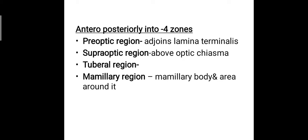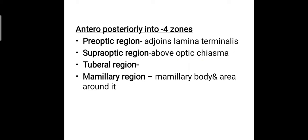Anteroposteriorly, the hypothalamus is divided into four regions: the pre-optic region, supra-optic region, tuberal region, and the mammillary region. The pre-optic region adjoins the lamina terminalis. The supra-optic region is placed above the optic chiasma. Then comes the tuberal region, and finally the mammillary region, where the mammillary body and the area around it is termed the mammillary region.